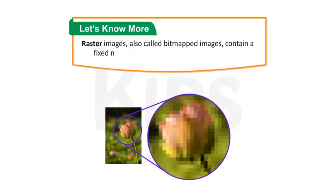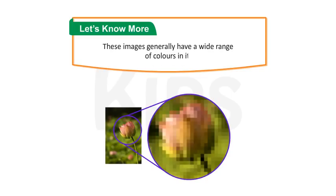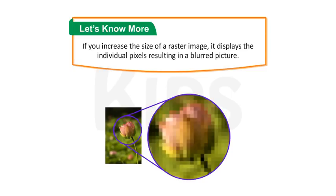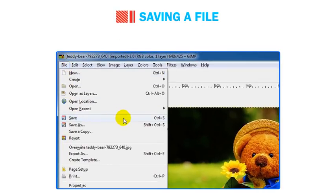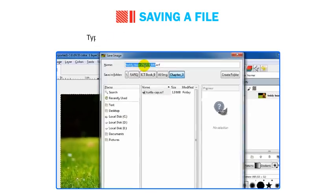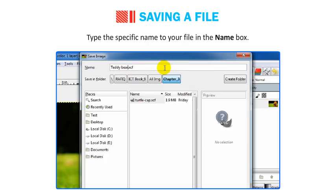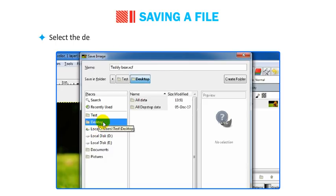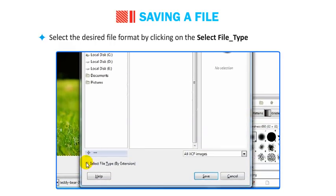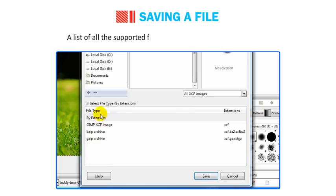Raster images, also called bitmapped images, contain a fixed number of pixels, with each pixel having its own color. These images generally have a wide range of colors. If you increase the size of a raster image, it displays the individual pixels, resulting in a blurred picture. To save a file, select File then Save. The Save Image dialog box appears. Type a specific name for your file in the name box, select the location from the Save In Folder option, and select the desired file format by clicking Select File Type by Extension. Then click Save.